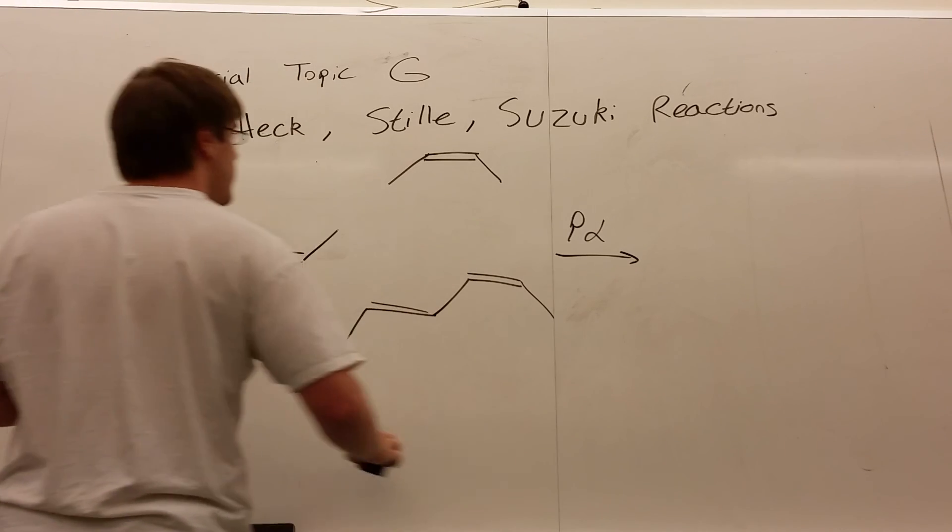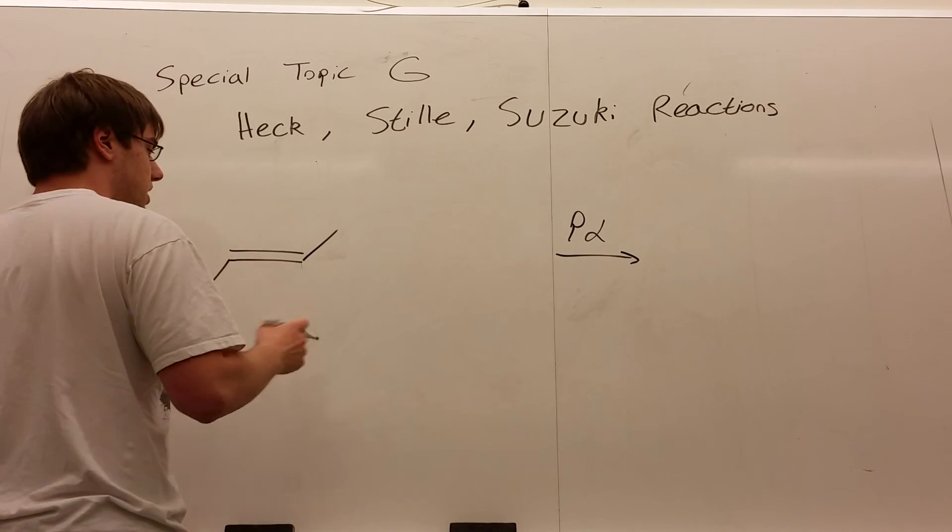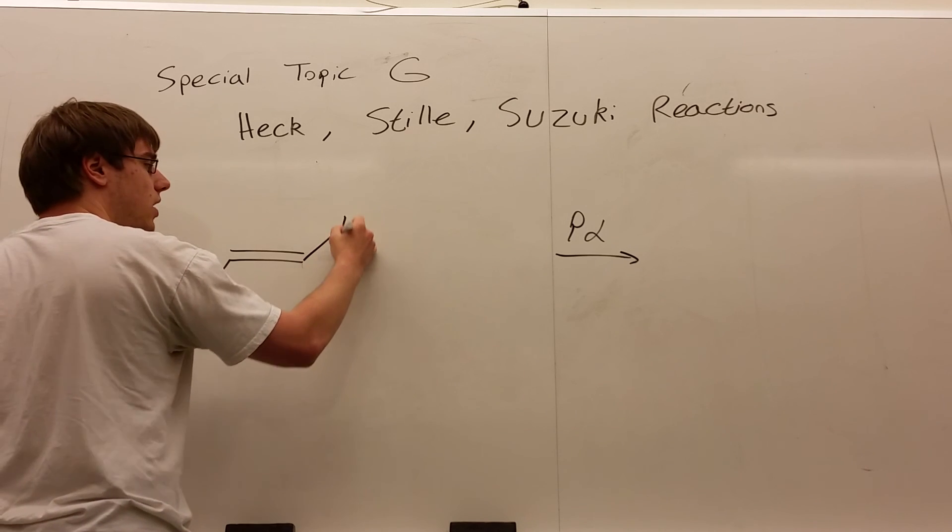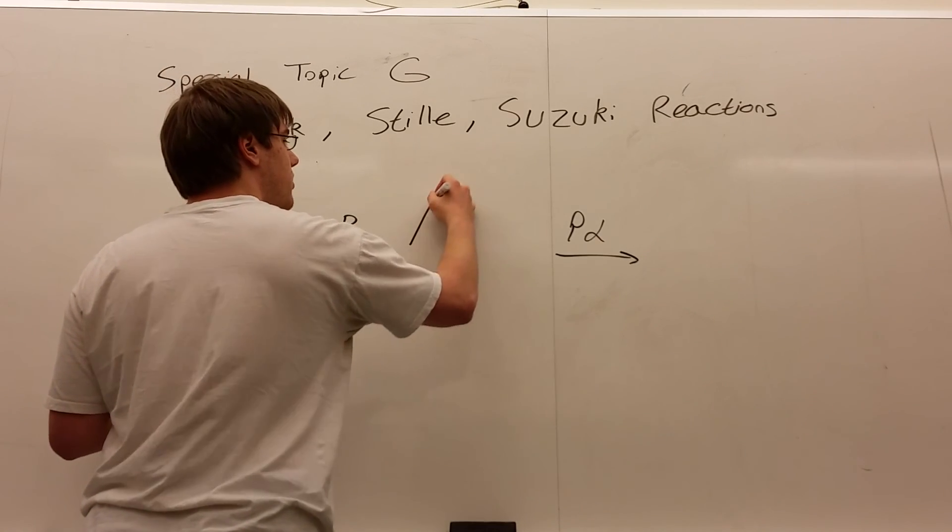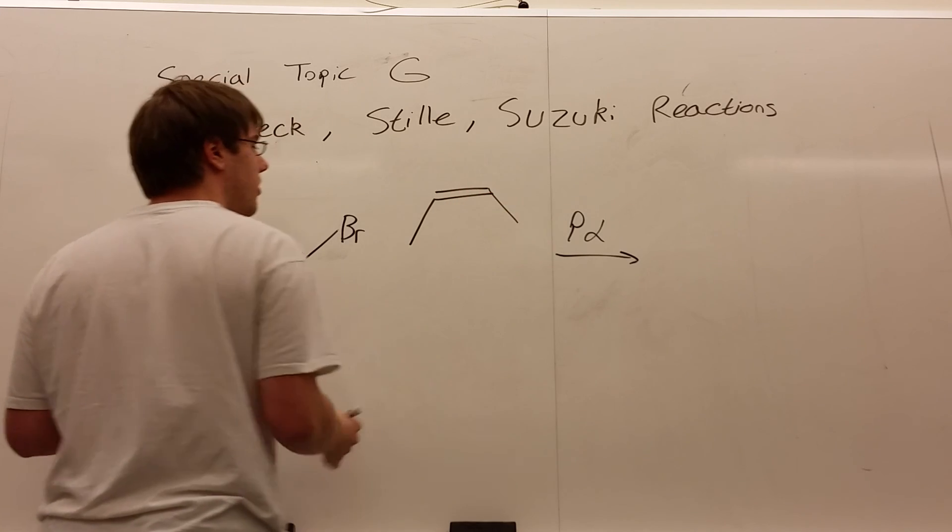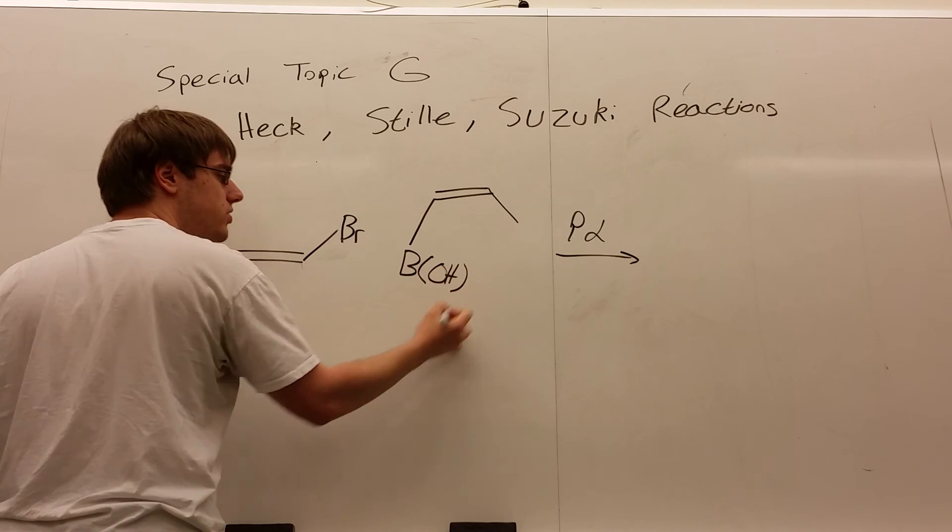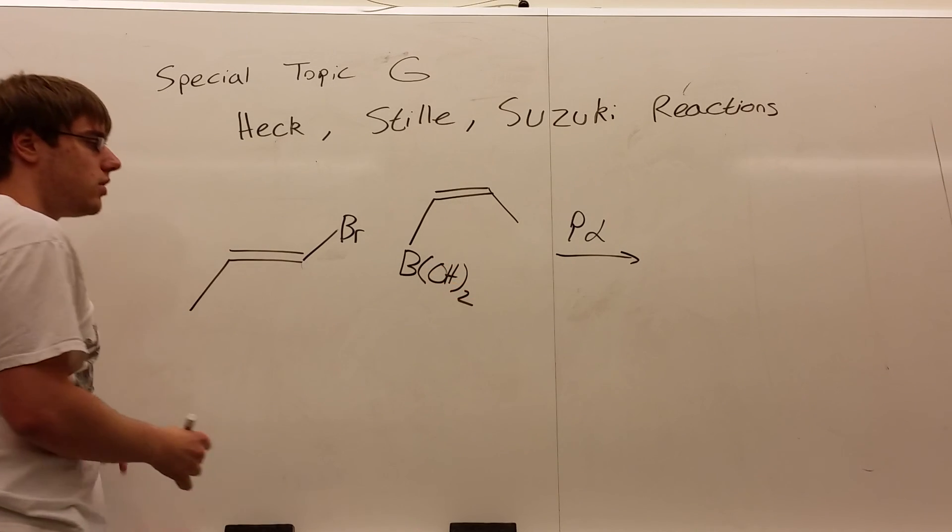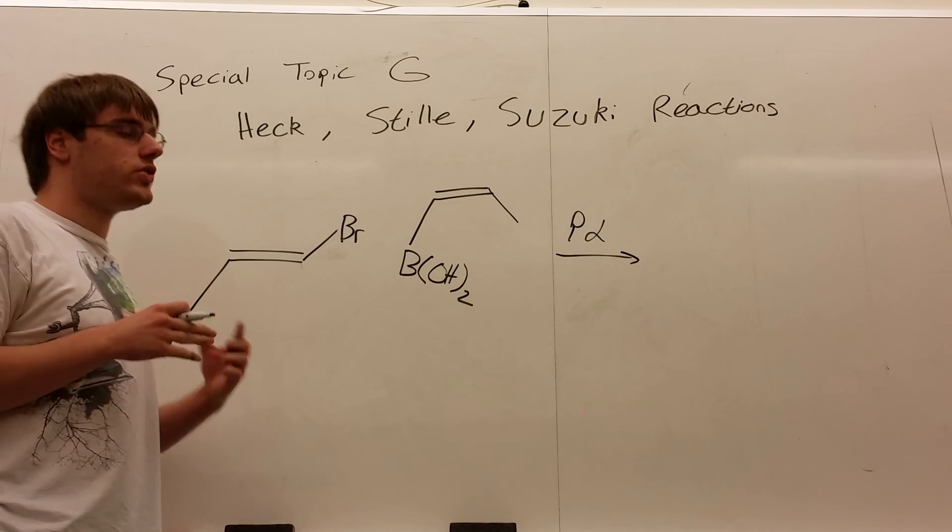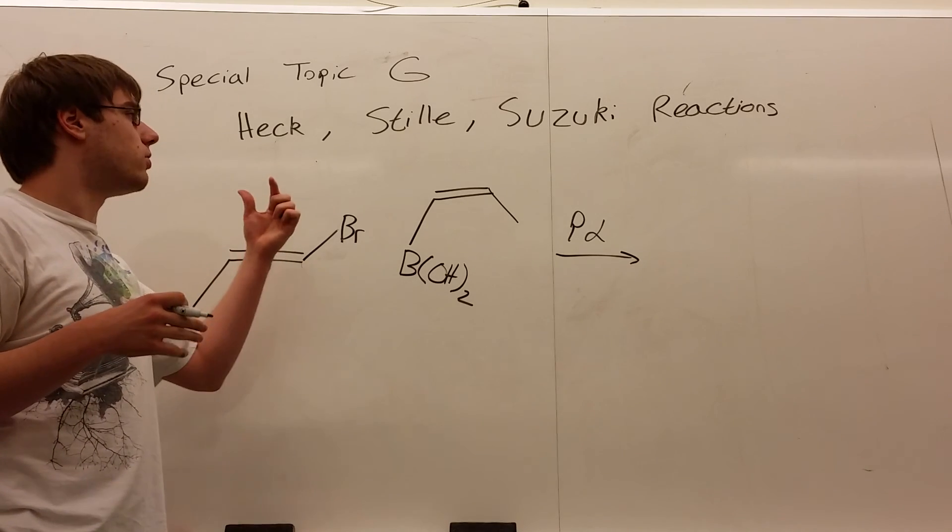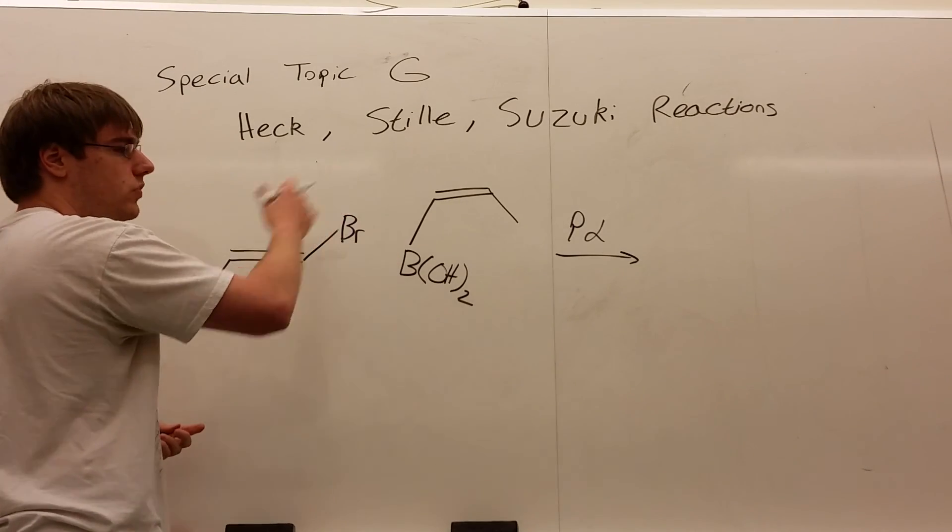The Suzuki reaction is also pretty much the same thing as the Stille reaction. On one carbon-carbon double bond, you have a leaving group. So I'm going to use bromine again. And then on the other double bond, you are going to have B, so boron, (OH)2, a borate. And the rules that I just gave you for the Stille are exactly the same for the Suzuki reaction. So this one is Suzuki, and the one with the tin is Stille.